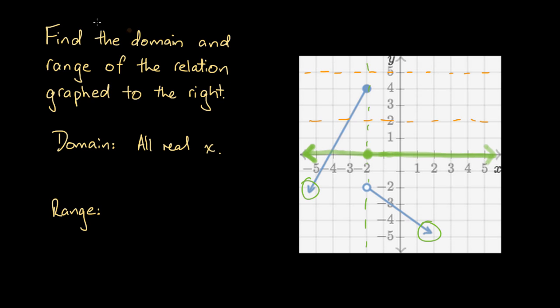So projecting this onto the y axis, we get a point here, a solid point, because this point is solid, and then we'd get a line that extends down towards the bottom of our graph, and because we have these two arrows, it means that both these lines continue this behavior as y goes to minus infinity, which means we can draw an arrow here.